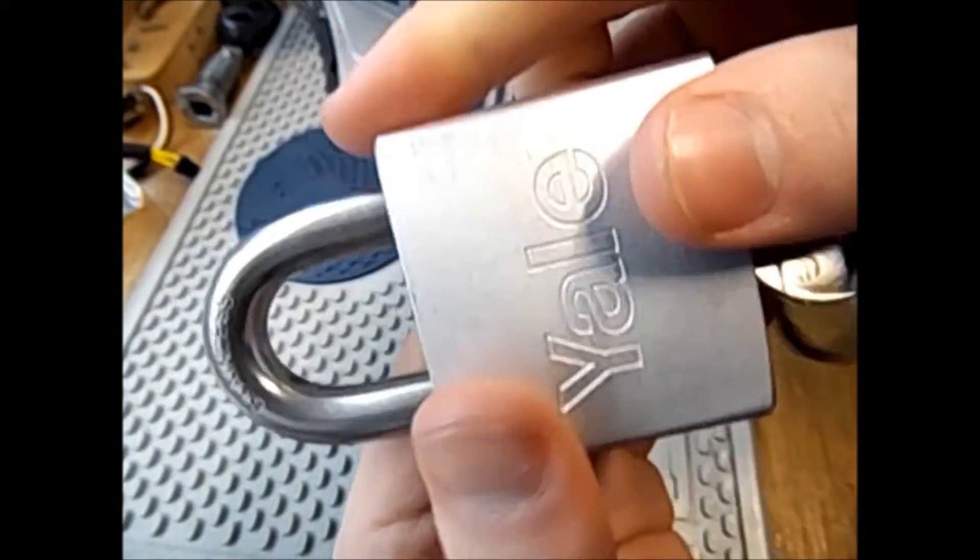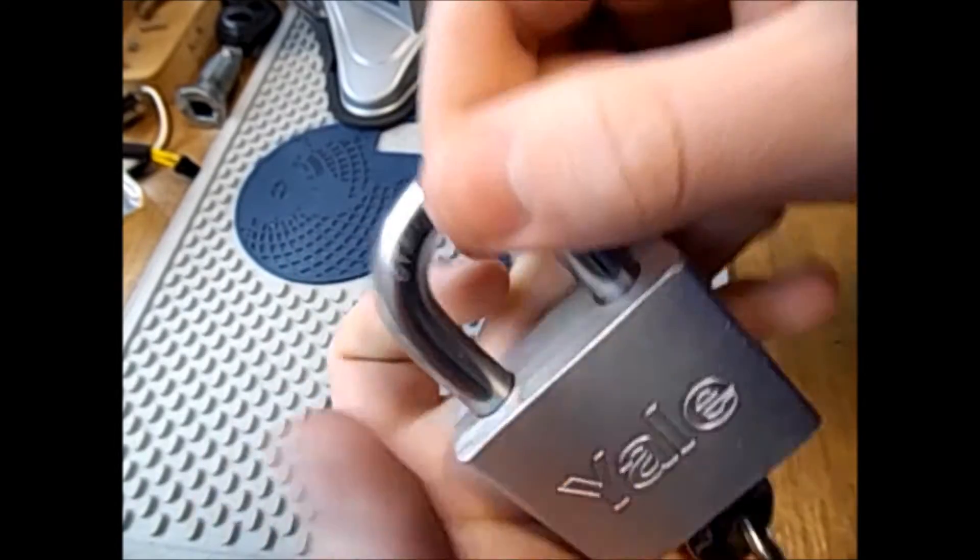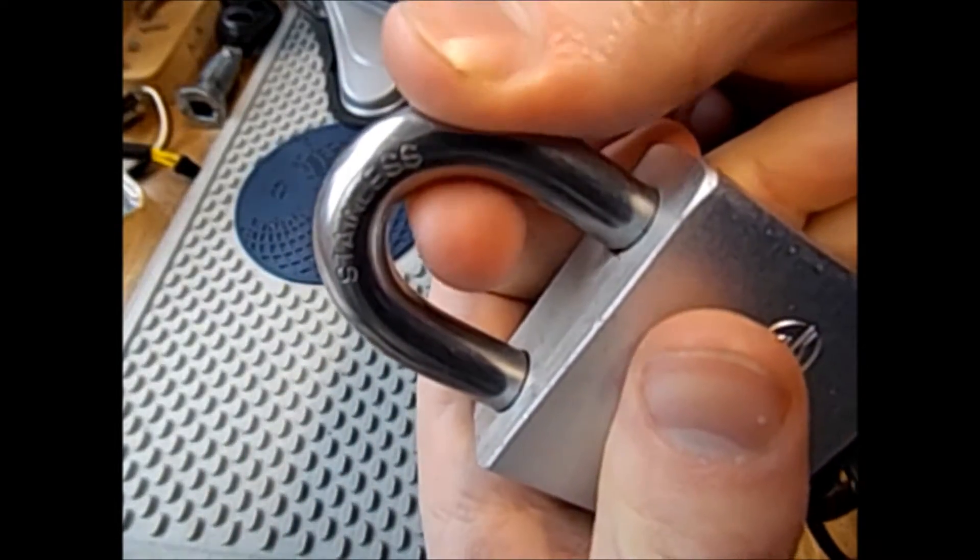So let's take a look at the padlock actually. It's quite interesting. It's a Yale and it seems to have an aluminum body. It's really light but the shackle is stainless steel.